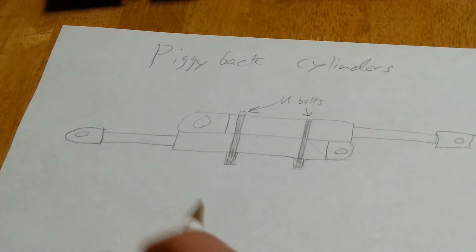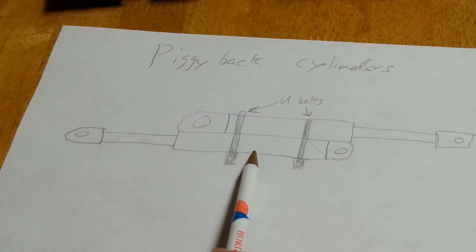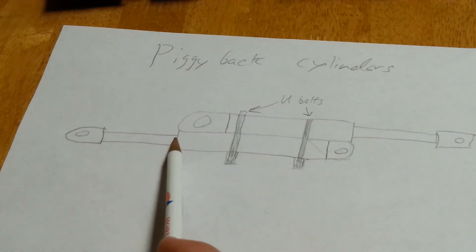And again, the reason this setup is handy is because of compact spaces where you need the stroke more than what you can get from one cylinder, but you can't fit a longer cylinder in your space. So by this, you're getting twice the stroke out of one casing length.